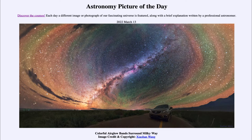Air glow occurs when light from the sun excites atoms within the atmosphere. It is ultraviolet light from the sun that actually excites these molecules and atoms and causes them to glow.